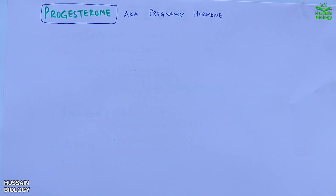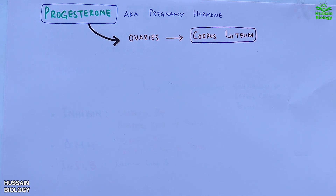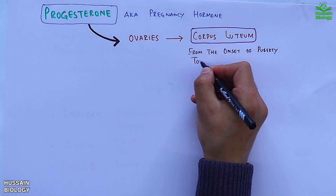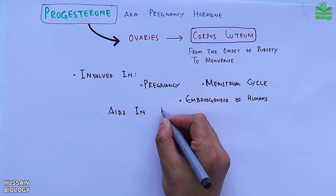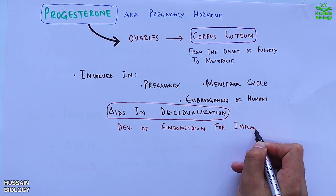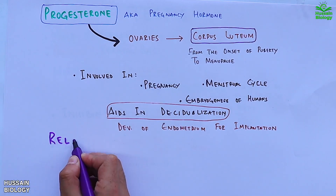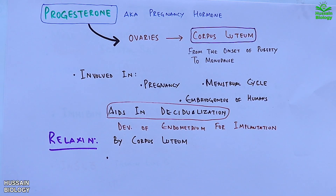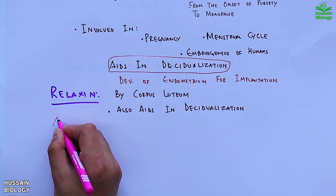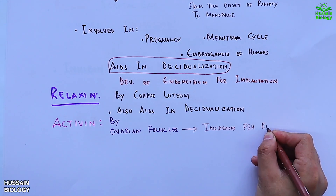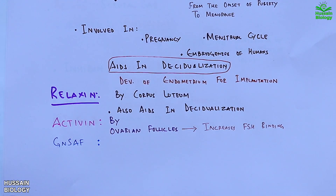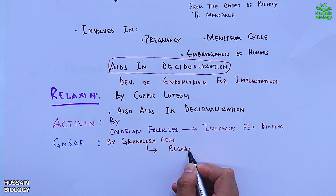Moving to progesterone, also known as the pregnancy hormone — within the ovaries we have a structure called the corpus luteum, which has endocrine functions and secretes progesterone from the onset of puberty to menopause. It is involved in pregnancy, the menstrual cycle, and embryogenesis, and aids in decidualization, including development of the endometrium for implantation. Relaxin is also secreted by the corpus luteum and mediates decidualization. Activin, secreted by ovarian follicles, increases FSH binding. GnSAF hormone — gonadotropin surge-attenuating factor — is secreted by granulosa cells and regulates the secretion of luteinizing hormone.